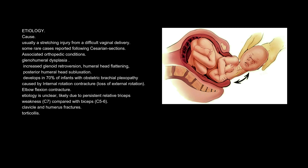Associated orthopedic conditions include glenohumeral dysplasia, increased glenoid retroversion, humeral head flattening, and posterior humeral head subluxation, which develops in 70% of infants with obstetric brachial plexopathy caused by internal rotation contracture. Loss of external rotation and elbow flexion contracture may also occur; etiology is unclear but likely due to persistent relative triceps weakness (C7) compared with biceps (C5-6). Additionally, clavicle and humerus fractures as well as torticollis are associated conditions.